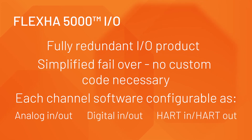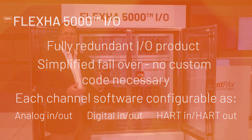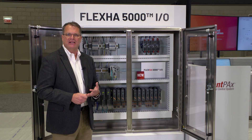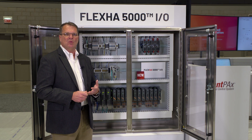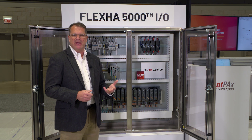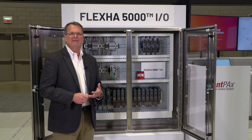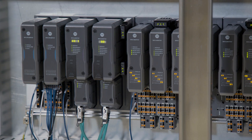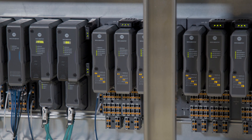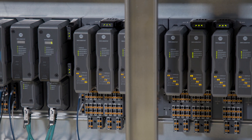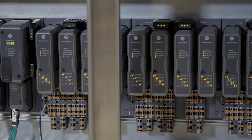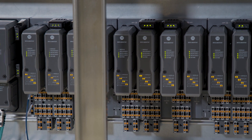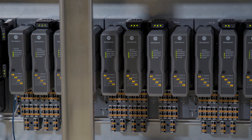Universal IO, software configured, allows a lot more flexibility in how you wire the content together and gives you more flexibility in spares. Instead of having to stock a lot of different types of modules in inventory, it lets you have a single card that can be reconfigured by channel to solve those needs.